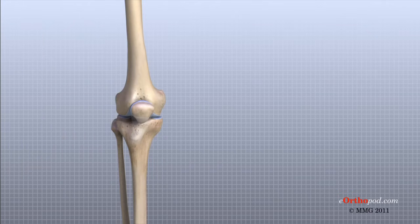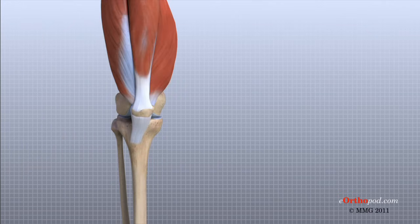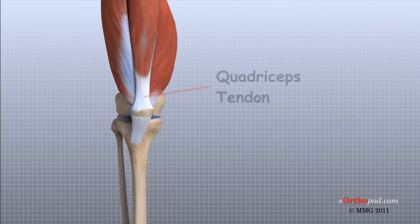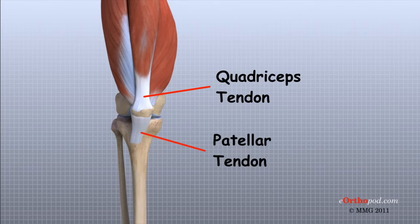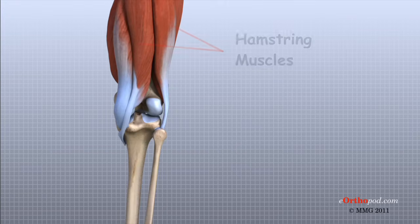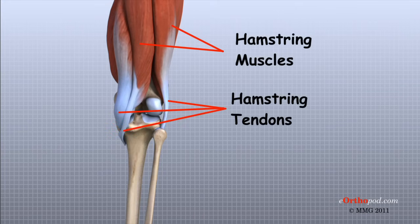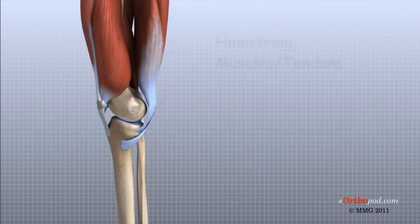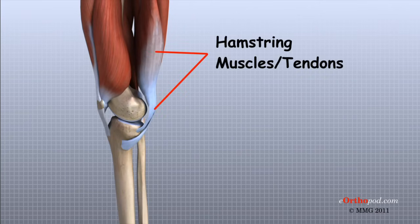Tendons are similar to ligaments, except that tendons attach muscles to bones. The quadriceps tendon connects the large quadriceps muscle of the thigh to the patella. This tendon continues across the patella and blends into the patellar tendon, which connects the patella to the tibia. The hamstring muscles on the back of the thigh also have tendons that attach in different places around the knee joint. These tendons are sometimes used as tendon grafts to replace torn ligaments in the knee joint.